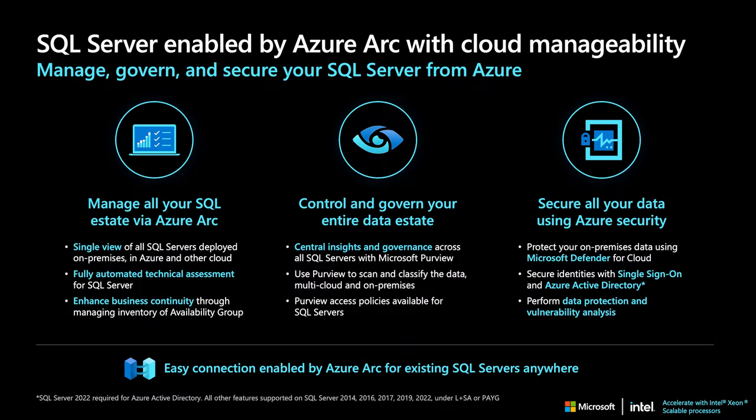The aspiration for many customers is to manage with a single control plane — have inventory, do tag management, and use Resource Graph to increase visibility into the data estate. Azure Arc collects important information about these databases: the version, the updates, and the configuration for these services, whether they are running with best practices in mind, so they can be automatically evaluated wherever they are running. Next comes governance — it's important to have consistent policies to govern data. Using SQL Server enabled by Azure Arc, you can connect SQL Server instances to Azure and start using governance services like Purview.